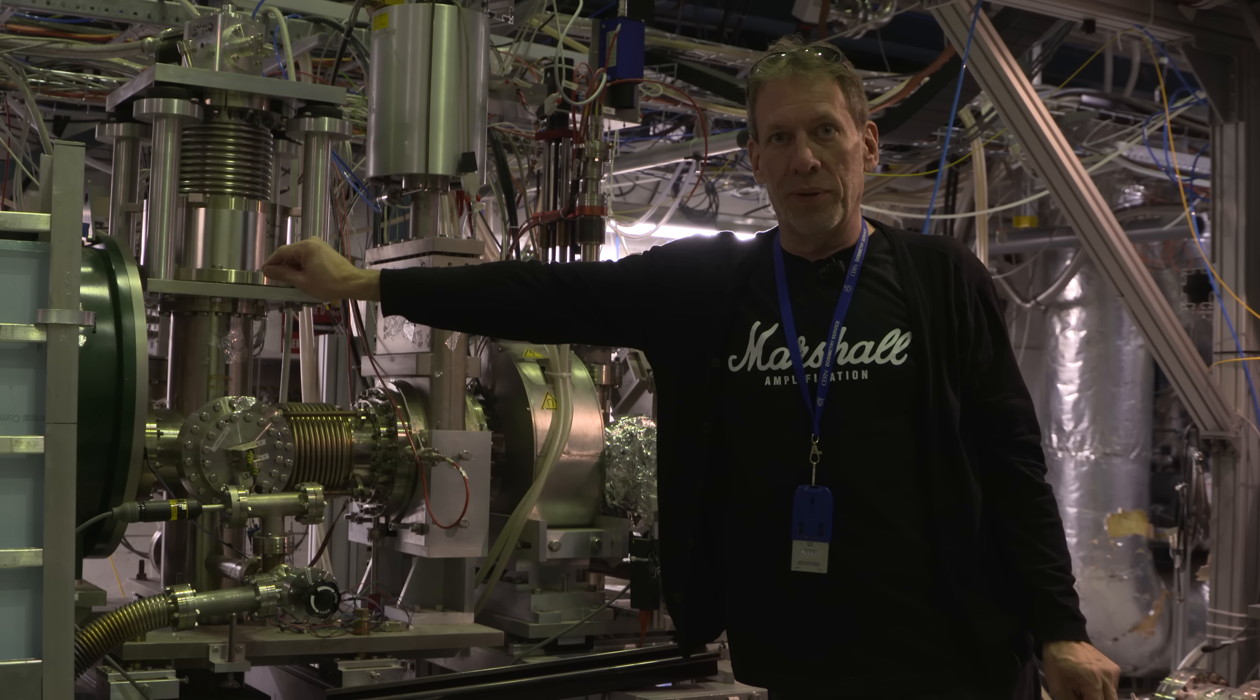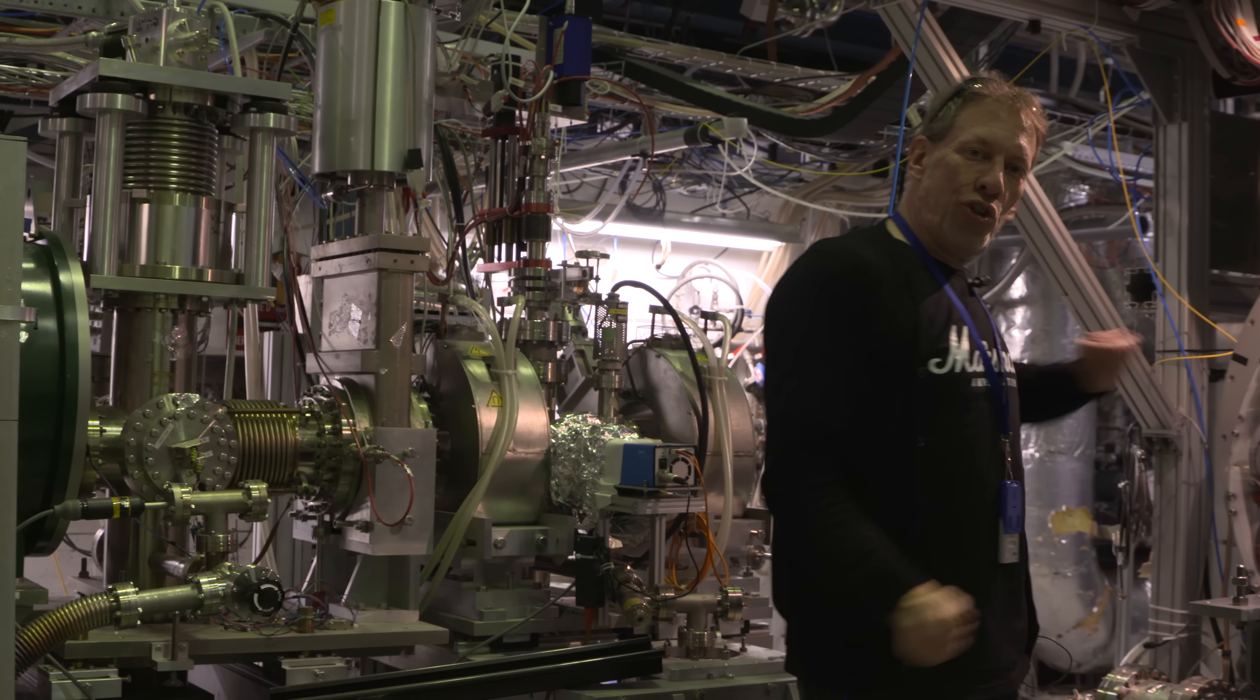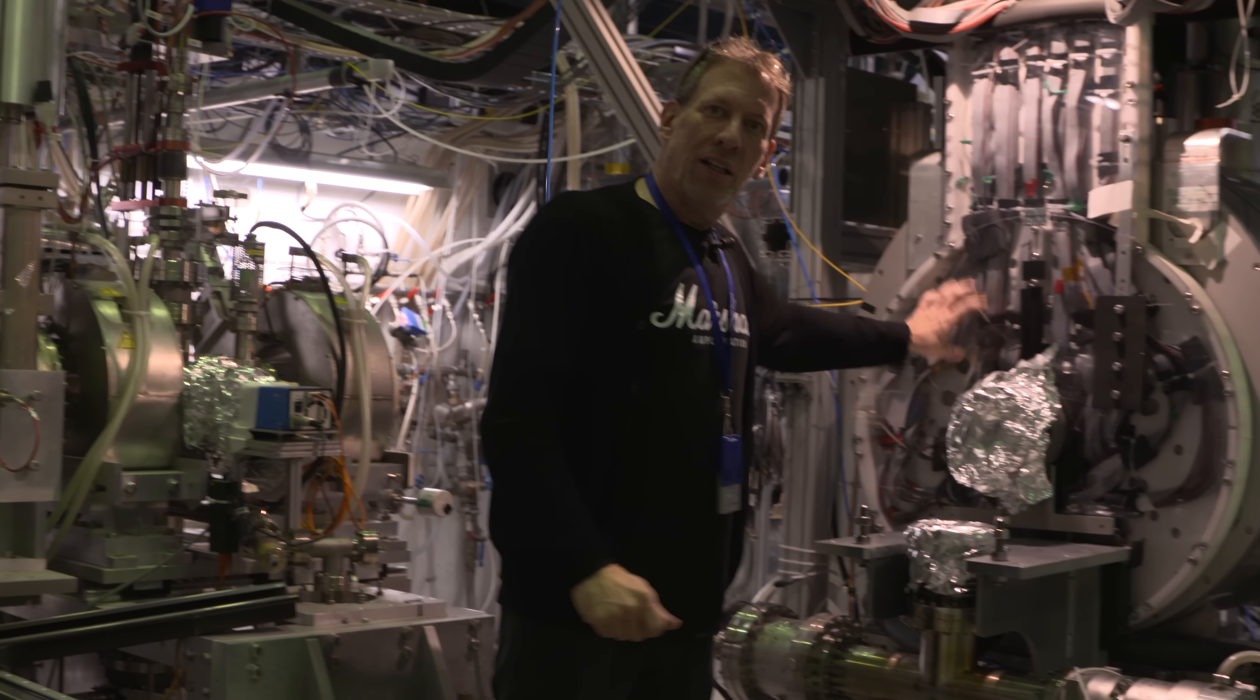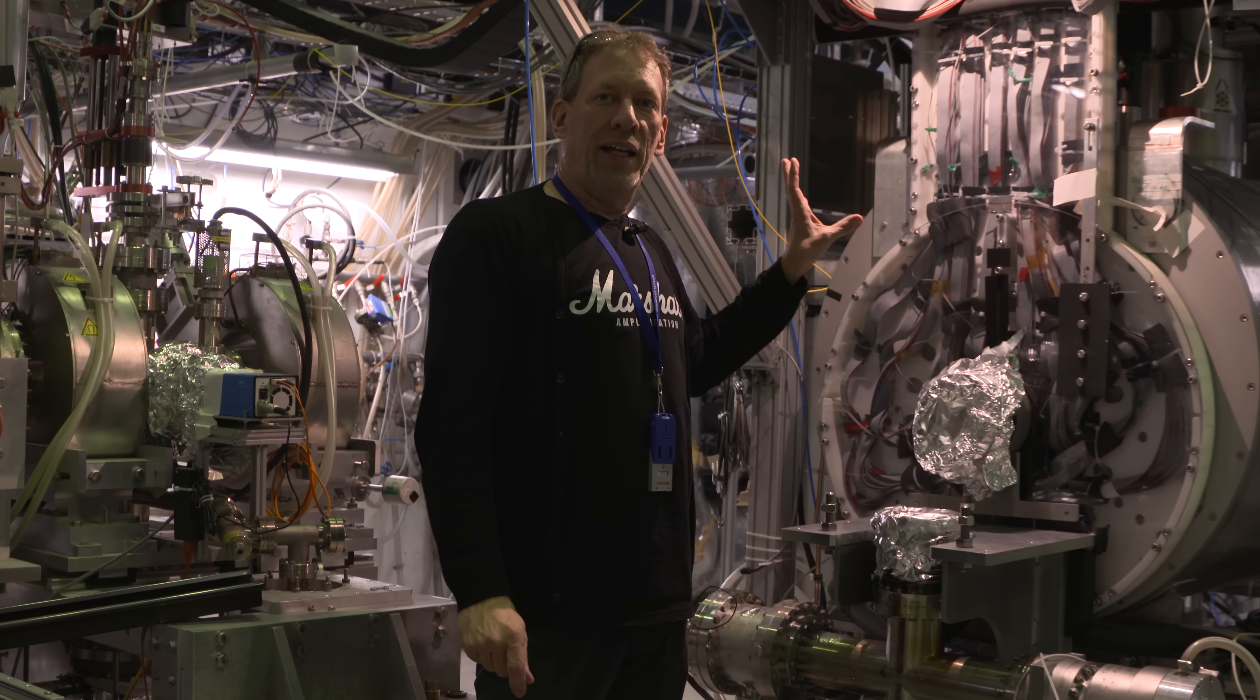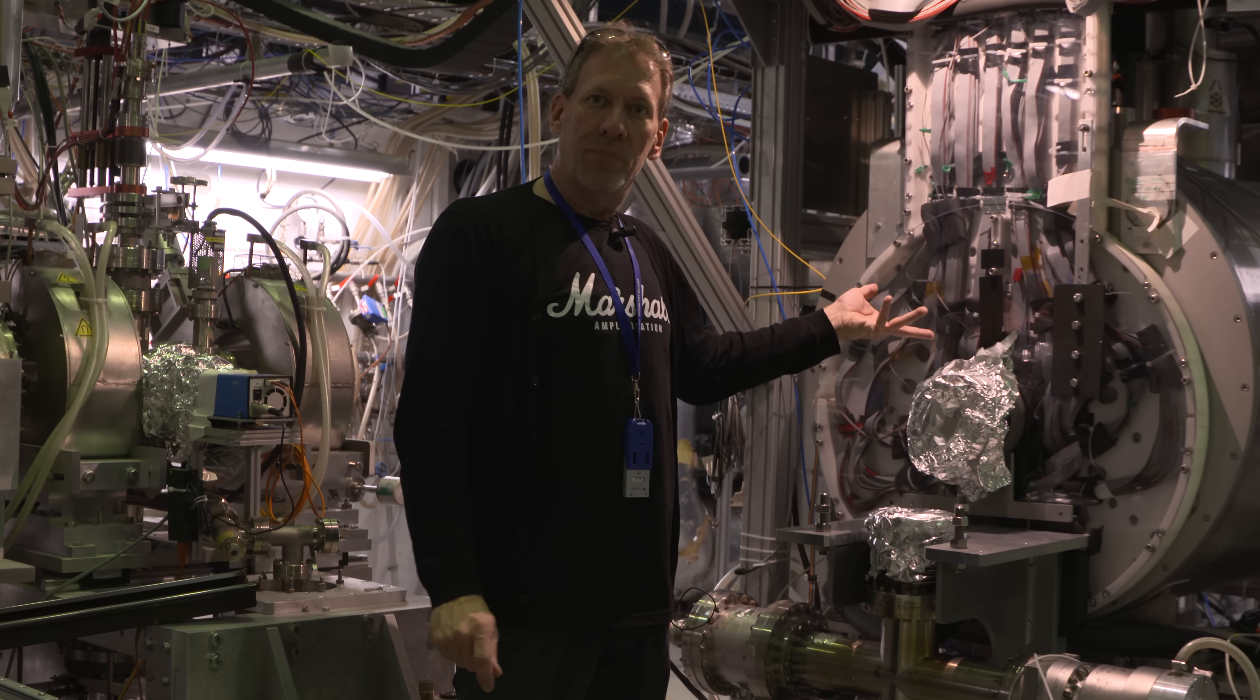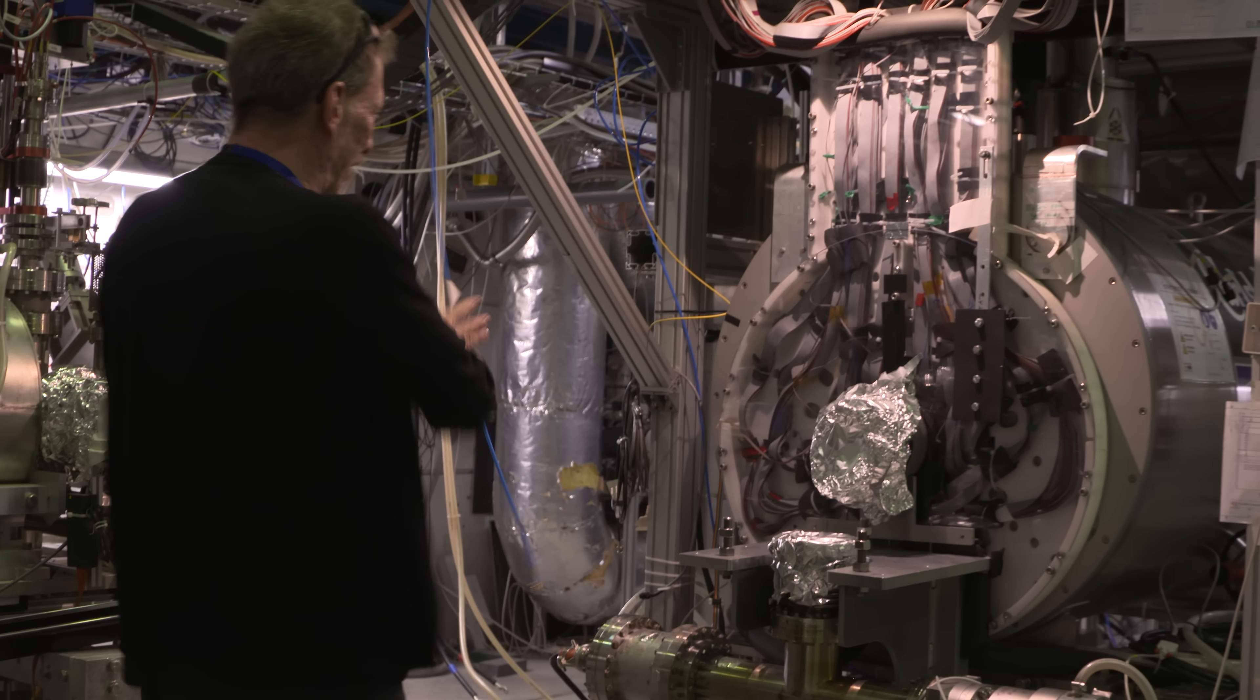superconducting antiproton trap. We store them there for a while, cool them, and when we need them we shoot them into this device, which is the main atom trap. This is where we synthesize and capture antihydrogen. Normally this is rolled over a meter so that these things are in line.